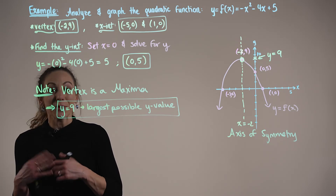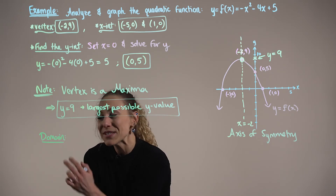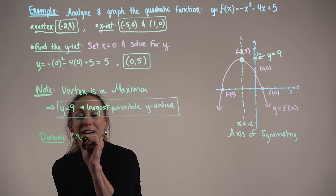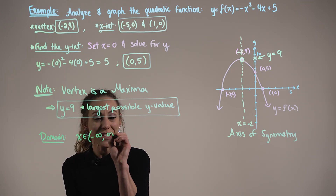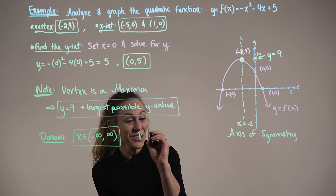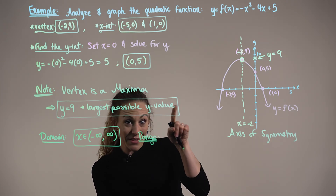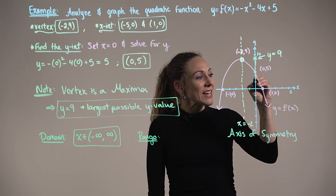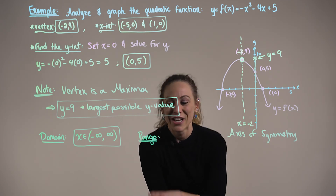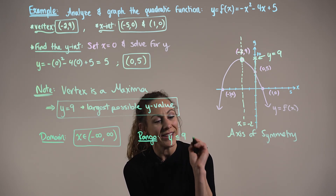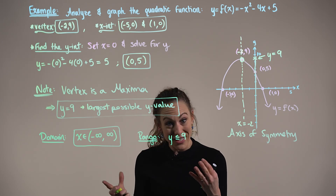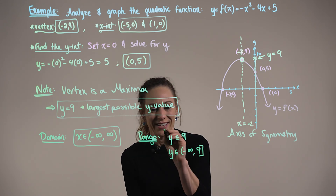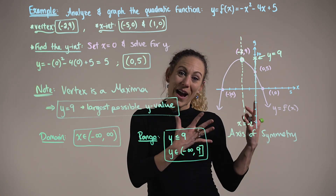Finally, we find the domain and range. Since we're working with a polynomial function of degree 2, there are no domain restrictions — x can be any real number. So the domain is (-∞, +∞). The range depends on the vertex: the largest y-value is 9 and y can approach negative infinity, so y ≤ 9. In interval notation, the range is (-∞, 9]. That completes our analysis and graph of the quadratic function.